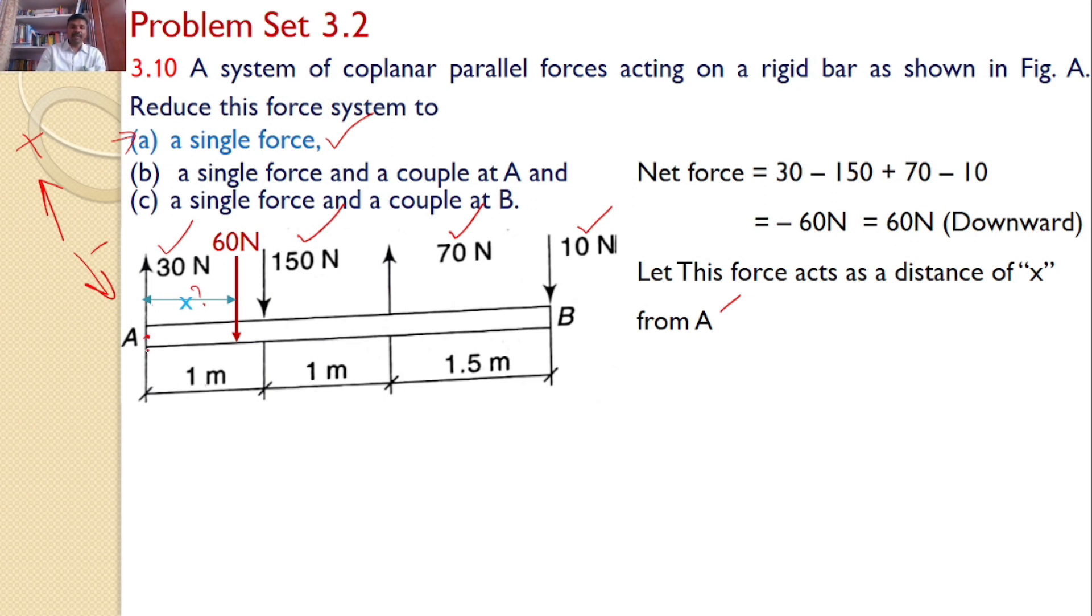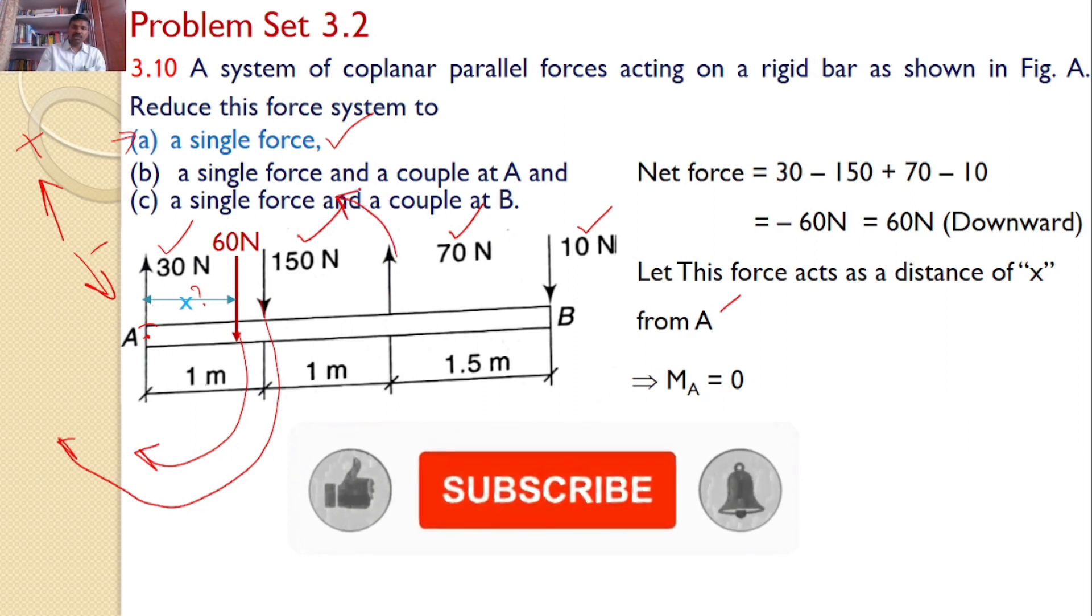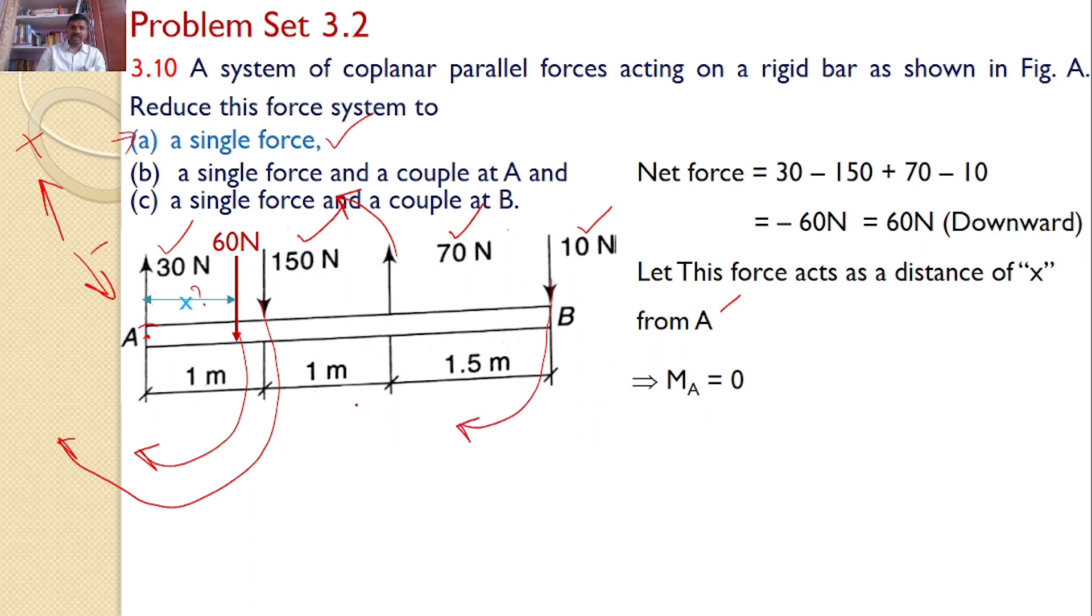How? By taking the moments about any point for that matter. So I will take the moment about point A. So this 60 will introduce a moment like this and the distance is X. Thus, 150 will introduce a moment like this and the distance is 1. 70 will introduce a moment in the opposite direction, the distance is 2. But this 10 will introduce a moment in this direction, but the distance is 2.5. Hence, I can say 60 into X plus 150 into 1 minus 70 into 2 plus 10 into the total distance is 3.5. So after simplification, I will get X is equal to minus 0.75 meters.